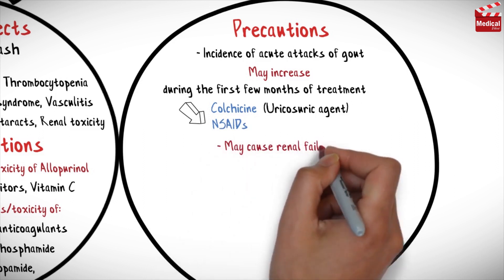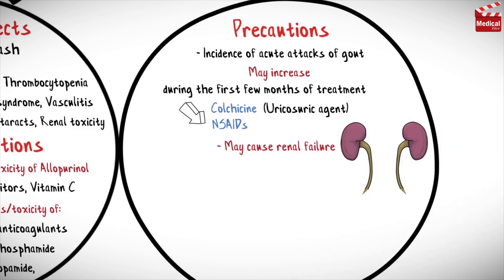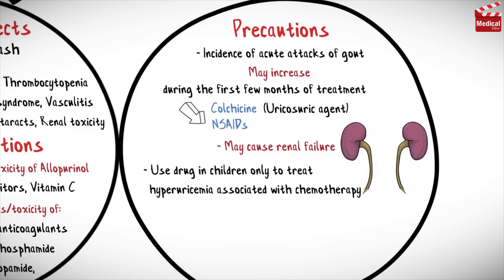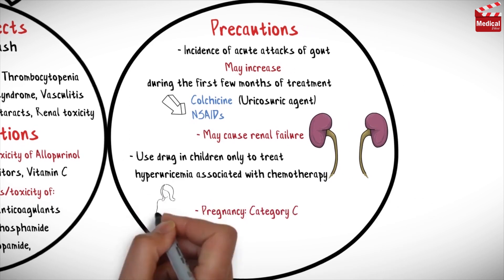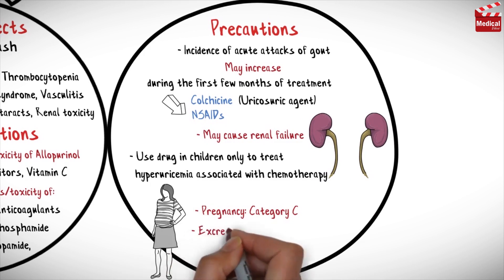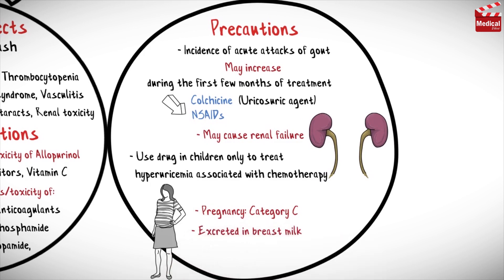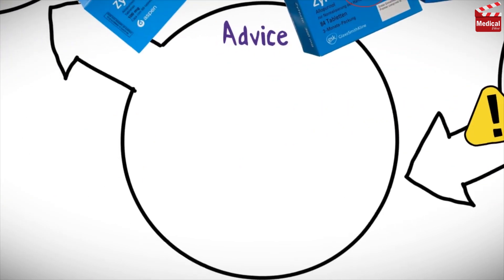This drug may cause renal failure through acute tubular necrosis, so in cases of renal function impairment, dose should be reduced. Use the drug in children only to treat hyperuricemia associated with chemotherapy. This drug is pregnancy category C and is excreted in breast milk, so caution is advised when used in nursing mothers.